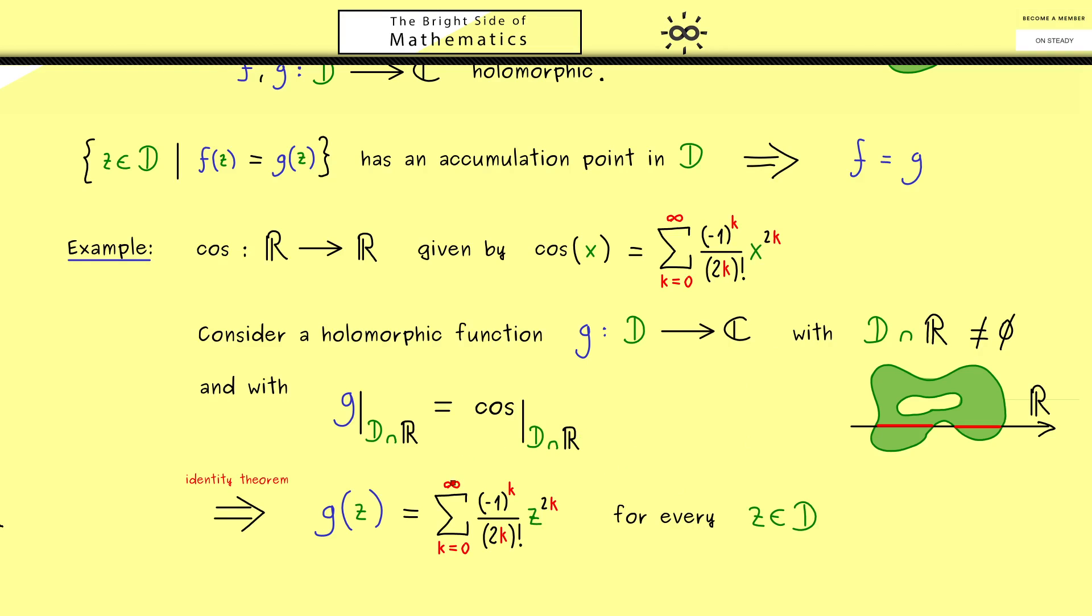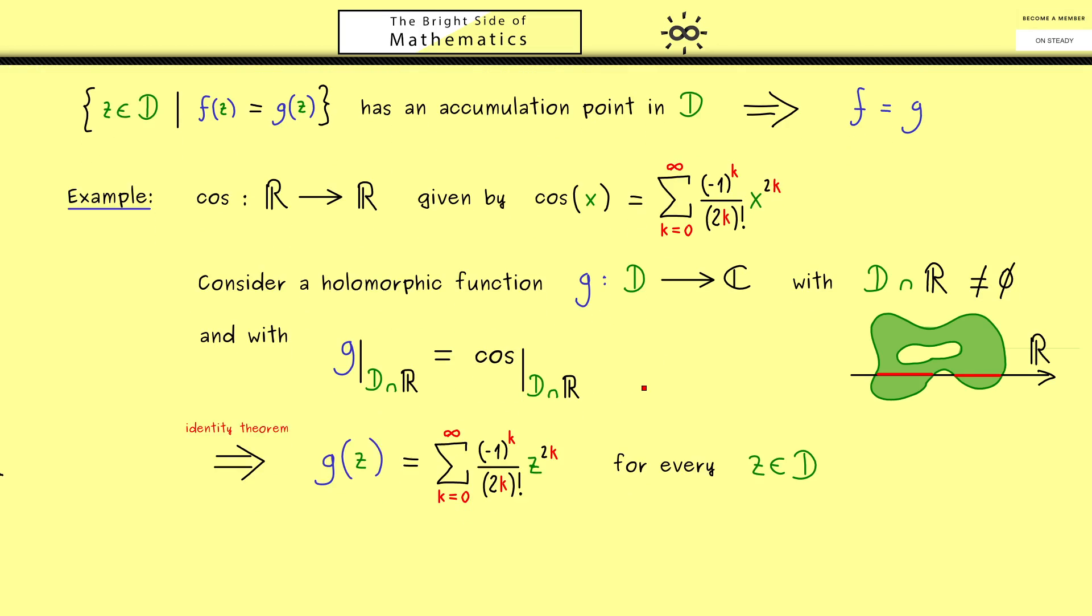So you see there is no choice at all for this extension if we want a holomorphic function. In particular, here we can extend the cosine function to the whole complex plane in a unique way. This is indeed an important result that comes immediately from the identity theorem.